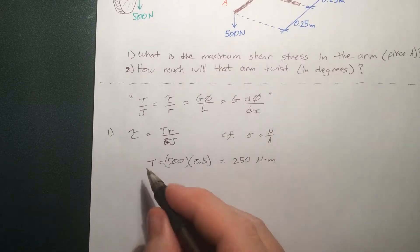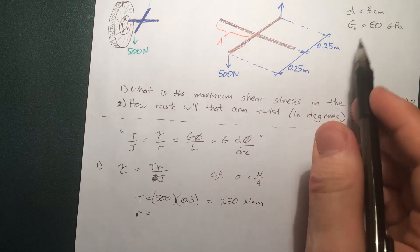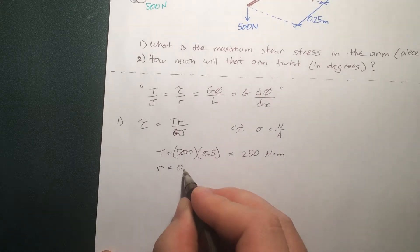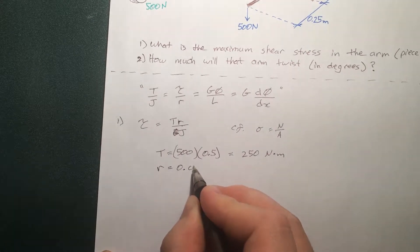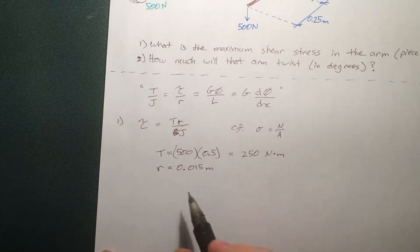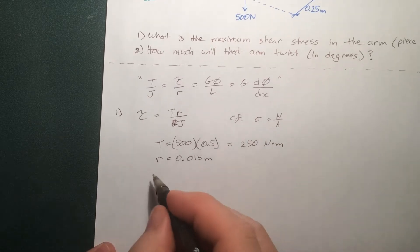Now the radius, pretty straightforward. The diameter is 3 centimeters, so the radius is half that, 0.015 meters. Move it over two places to get to centimeters, that's 1.5 centimeters.